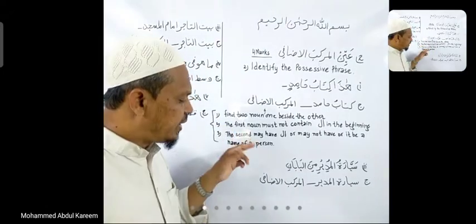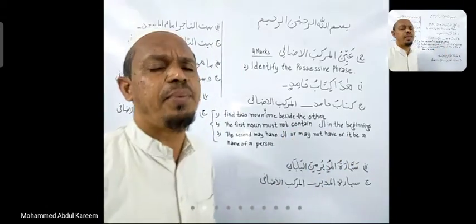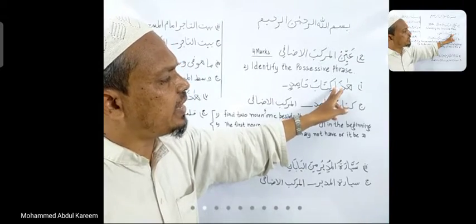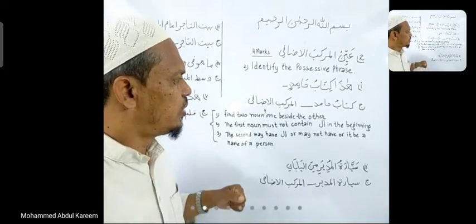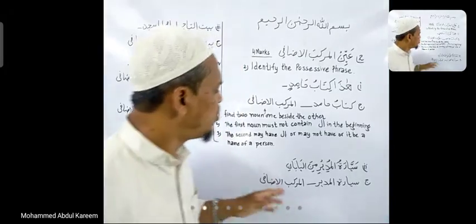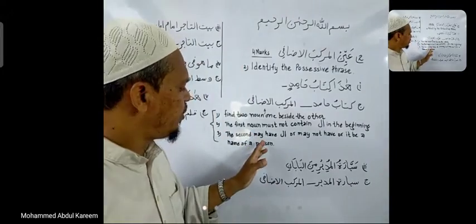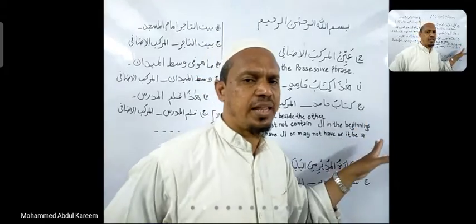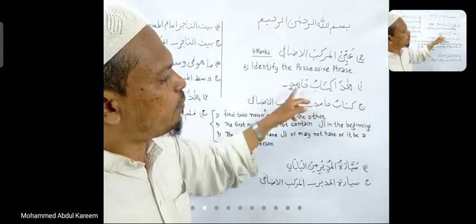Observe that the first noun, Al-Muzaafu, must not contain Alif-Lam at the beginning, and it also must not carry Nunashen at the end — this is also a rule. The second noun may have Al or may not have Al. If Al is not there, then it will be a name of a person.